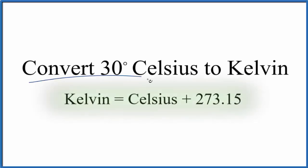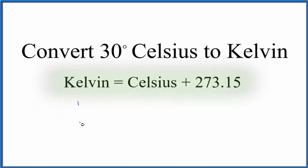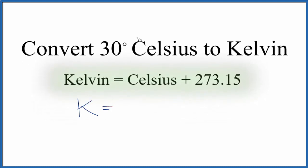Let's convert 30 degrees Celsius to Kelvin. We're going to use this equation to do the conversion between Celsius and Kelvin, but you could also convert Kelvin to Celsius using this as well. I really recommend you memorize this equation. So, we have Kelvin, that's K, and we have 30 degrees Celsius.